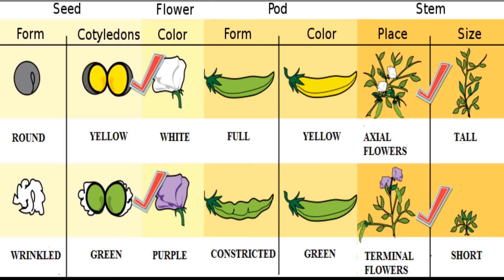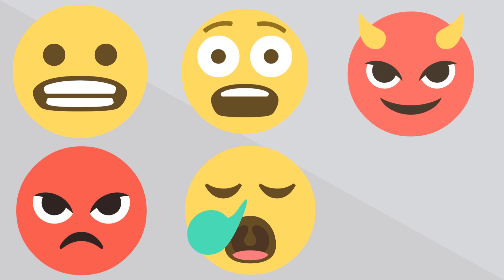Let's look at an analogy. Think of an emoji. The trait is the emoji. The different forms of the same trait are the alleles. How about a couple more real-life examples.